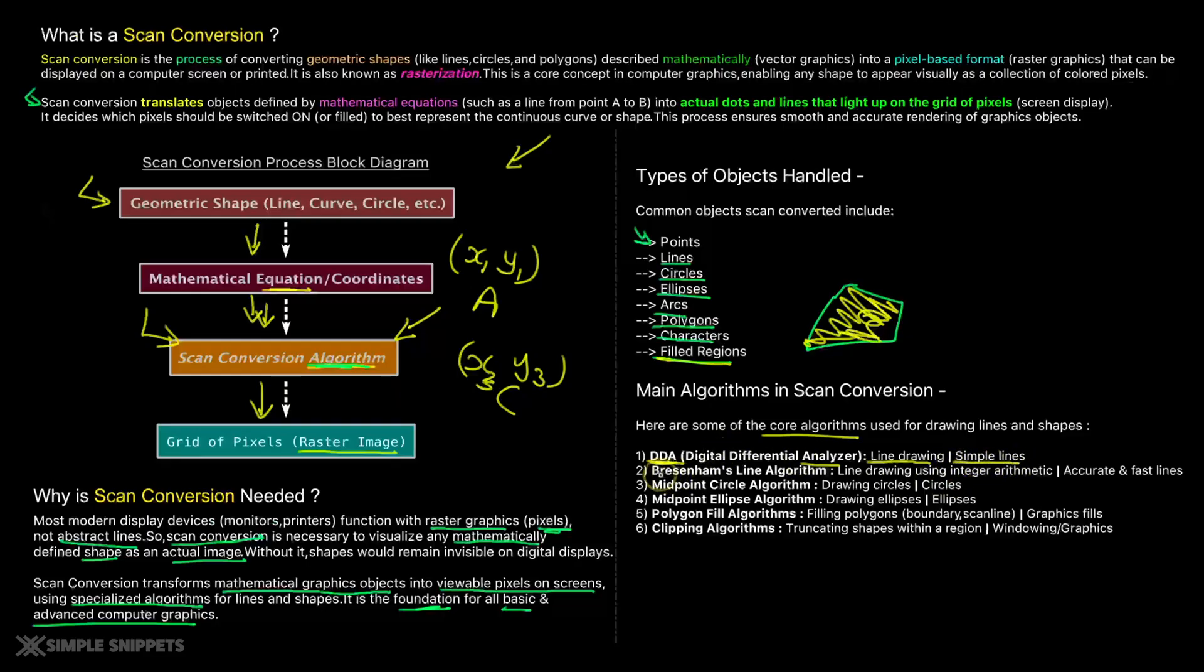Then we have another algorithm, which is called Bresenham line drawing algorithm, which is again, a line drawing algorithm, which uses some arithmetic, some different methodology and it uses some different methodology compared to DDA. And it is generally accurate and fast.